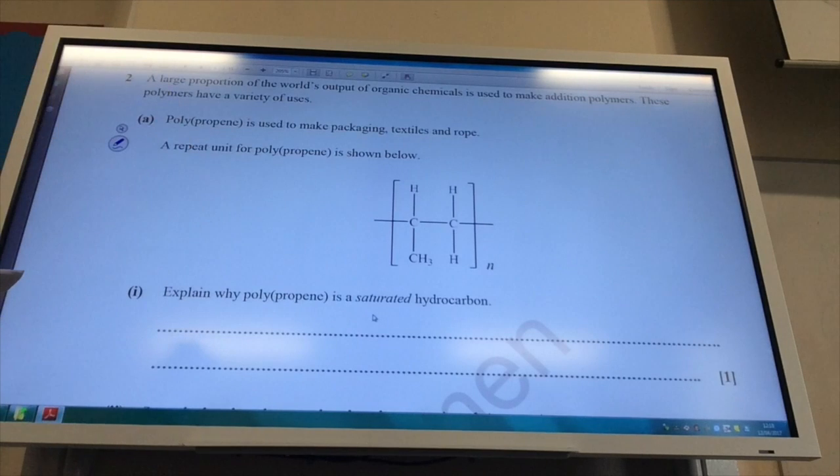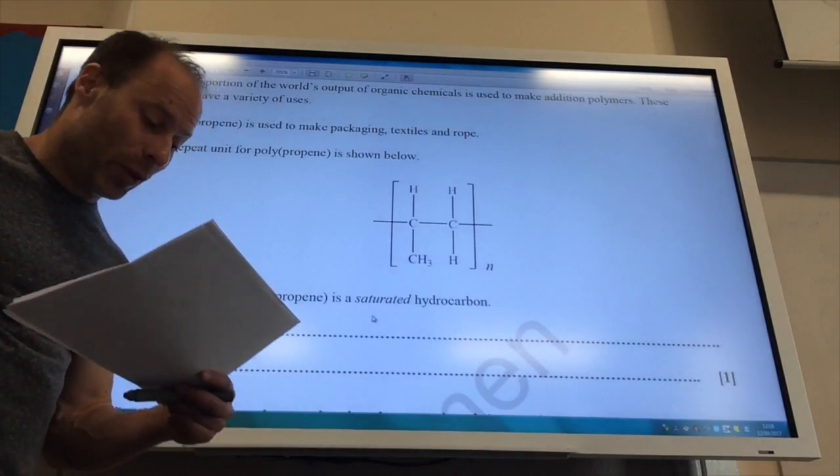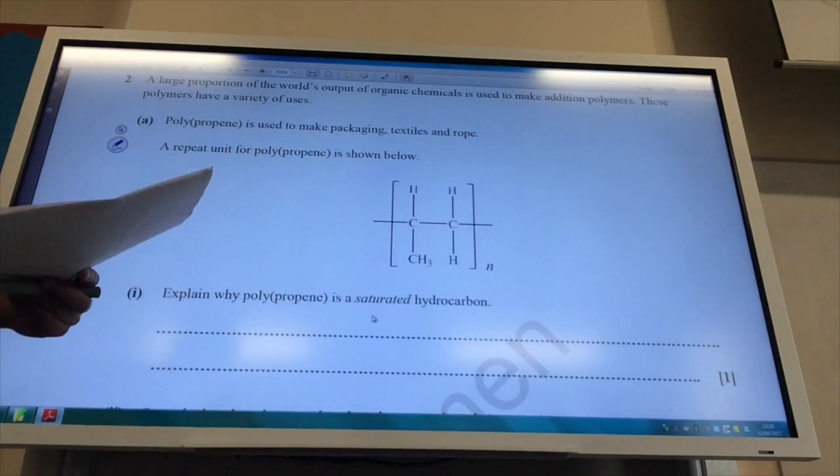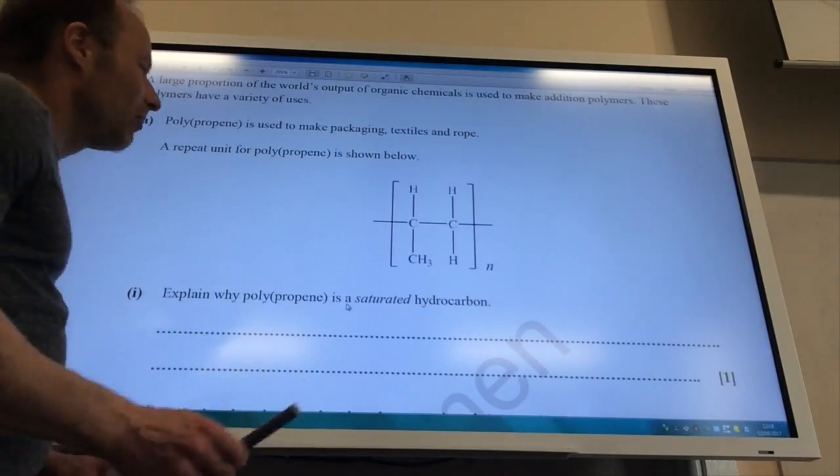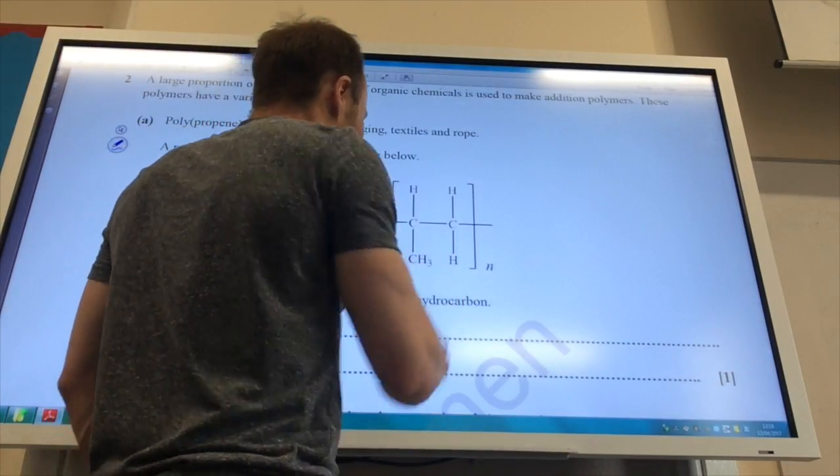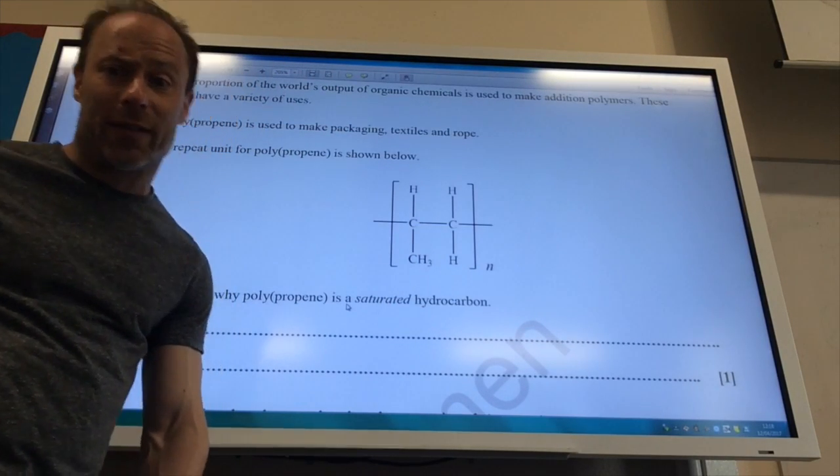Right, let's power on to question two then. Large proportion of the world's organic chemicals used to make addition polymers, which are very useful. Polypropene is shown below. Why is polypropene a saturated hydrocarbon? Well, if you have a look at it, it contains only single bonds. So it only has single bonds in it. What is the bond angle around each carbon in polypropene? Well, around each carbon, each carbon has got four bonds and therefore it must be tetrahedral and therefore your bond angle is 109.5.